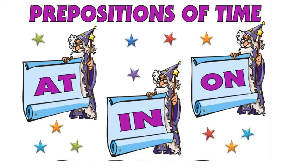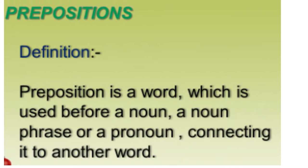आज हम इसमें करेंगे preposition of time. Preposition of time के लिए three words use होते हैं: at, in, और on. पहले हम देखते हैं कि preposition की definition क्या है — Preposition is a word which is used before a noun, a noun phrase, or a pronoun, connecting it to another word. Preposition जो है वो एक word है जो noun या noun phrase या pronoun से पहले इस्तमाल किया जाता है और ये दूसरे word से connect करता है।